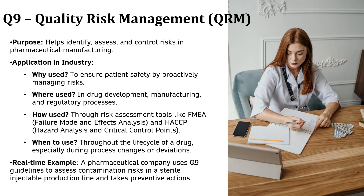Now let's explore ICH Q9, Quality Risk Management Guideline, which is all about identifying, assessing and controlling risks in pharmaceutical manufacturing to ensure patient safety. In drug production, even small risks can lead to severe safety issues. By managing risk proactively, companies can prevent quality failures. For example, a pharmaceutical company making sterile injectable drugs follows ICH Q9 to assess the risk of contamination in their production line. Based on their analysis, they install better filtration systems and improve clean room procedures. Without ICH Q9, companies would rely on trial and error, leading to product recalls. With proper risk management, they can ensure consistent drug quality and patient safety.